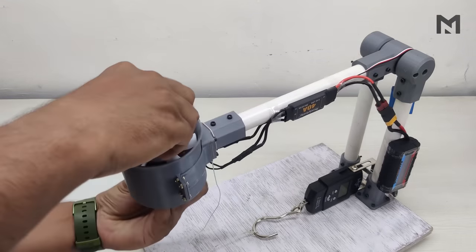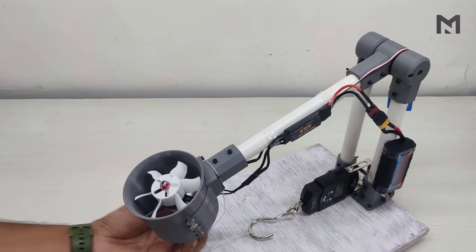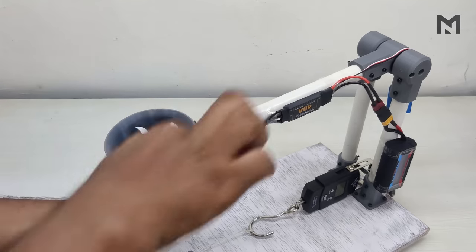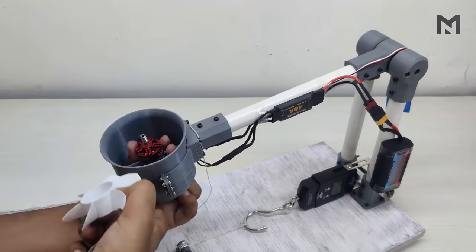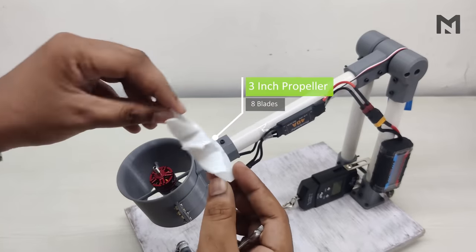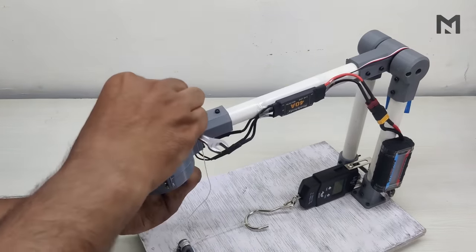First remove the diffuser part by pulling it out, then hold the motor from the bottom and loosen the motor nut with the help of a wrench. Once the nut is out, pull out the propeller. Now I am using the three-inch propeller with eight blades. Attach it to the motor and fix it with a nut. Once the nut is tight, put the diffuser back on top of the motor.